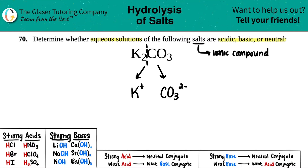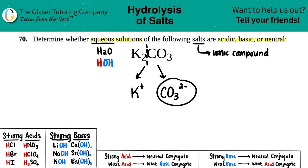These are always going to be in aqueous solutions, which means it's going to be with water. Water is always made up of hydronium (H⁺) and hydroxide (OH⁻). Hydronium is positive and hydroxide is negative, so opposites attract. The positive H will hook up with the negative carbonate, and the negative hydroxide always goes with the positive potassium. So OH always goes in the front, the H's go in the back.